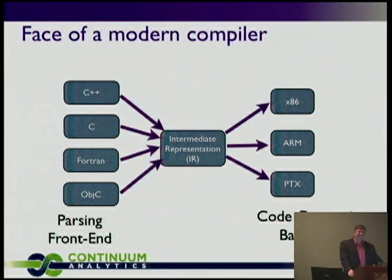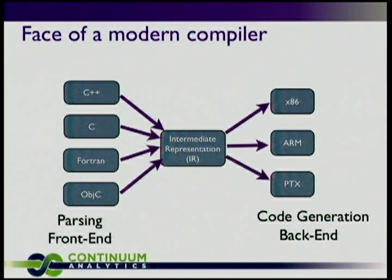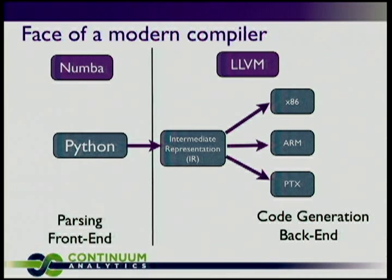The face of a modern compiler: there's a front-end step that parses syntax, converts it to some kind of intermediate representation (IR). Most compilers have several stages of IR. At some point it compiles down to machine code — x86, ARM, PowerPC, or GPU PTX code. That's the back end. Numba, our compiler, uses LLVM, which handles the IR, all the code generation, multiple optimization passes, and compilation to multiple back ends. All we had to do was go from Python to that intermediate representation — and in fact, the Python parsing is already done for us.